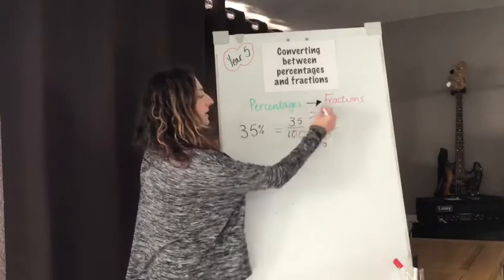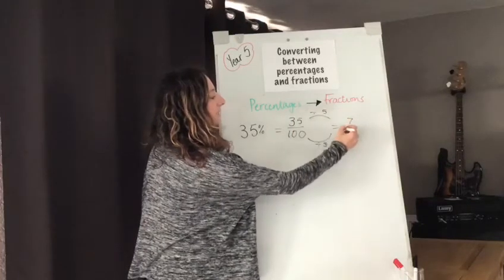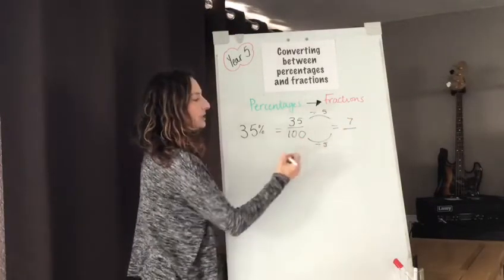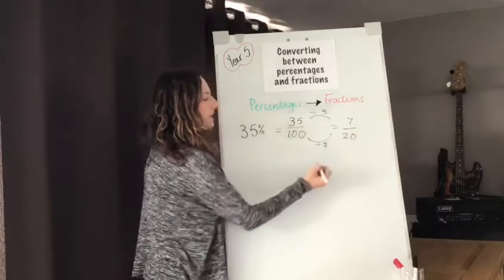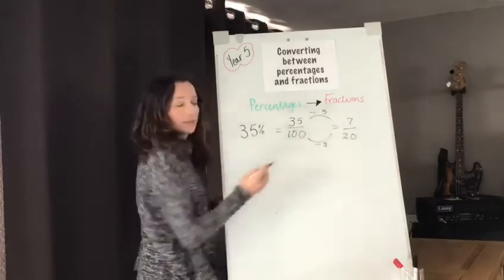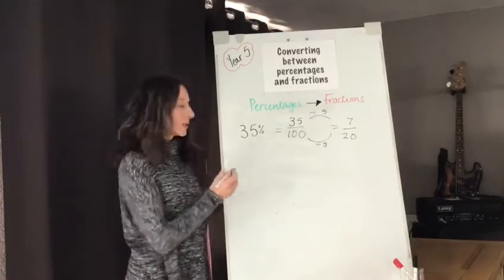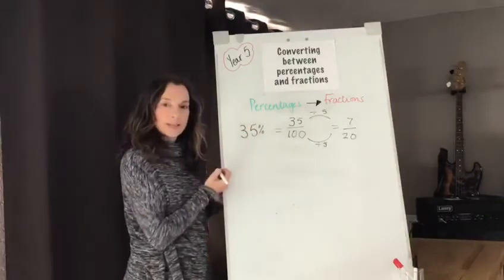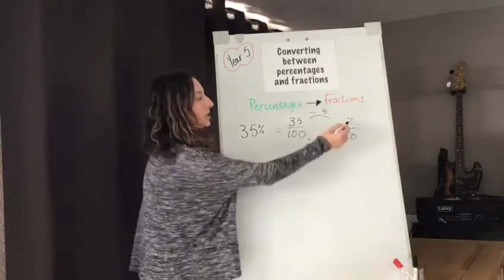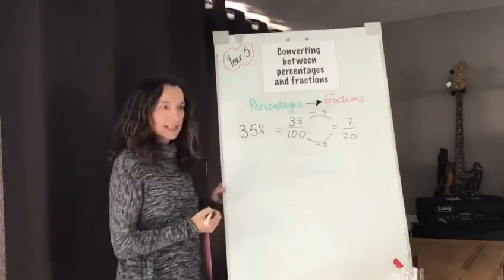35 divided by 5 gives us 7 and 100 divided by 5 gives us 20 and we cannot simplify this any further so we can say that 35% is equivalent to 7/20.